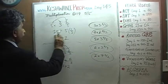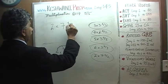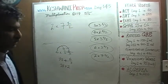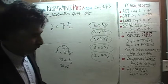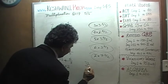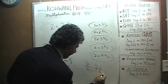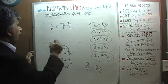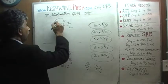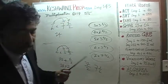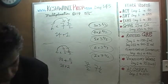Two times seven and a half. Not seven halves — two times seven and a half. Seven halves and seven and a half are two different things. Two times seven and a half is just two times seven, which is fourteen, and two halves make one, so the answer is fifteen.